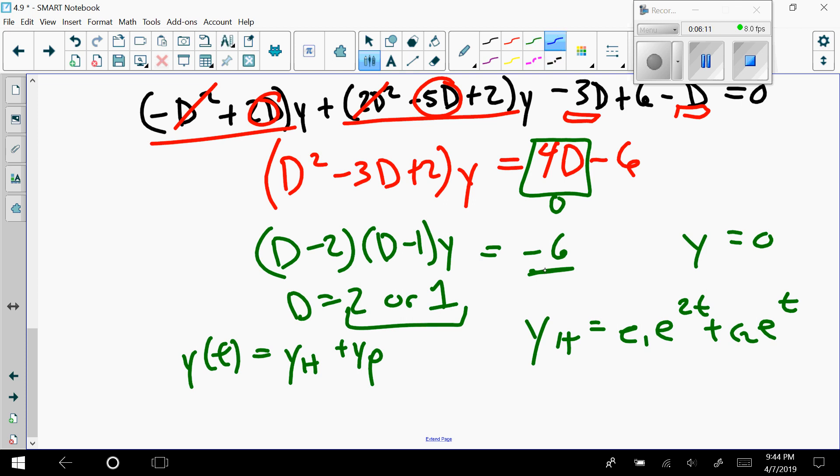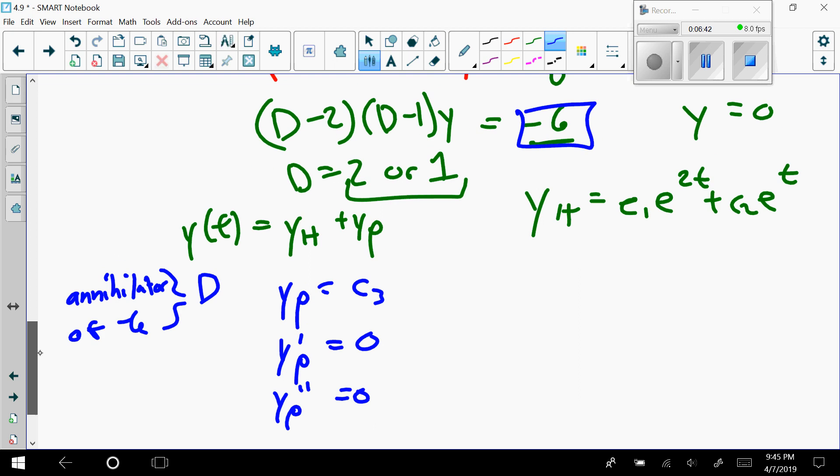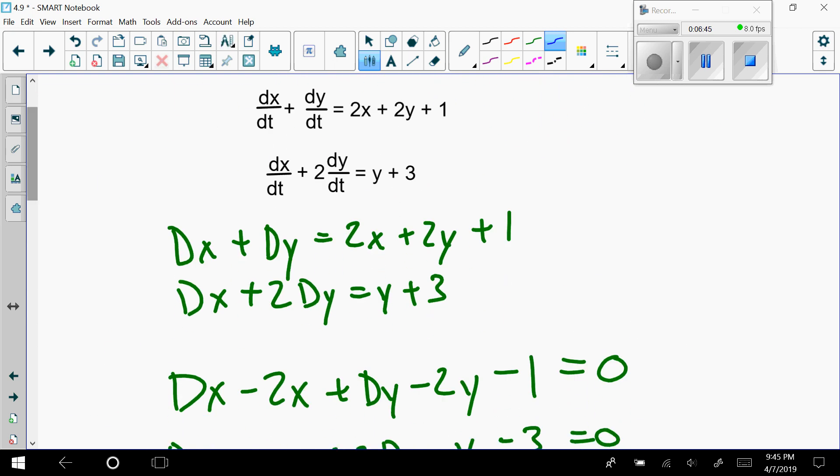Now for the particular, the annihilator of negative 6 is D. Well, if it's D, then that's D equals 0. Did I have 0 before? No. So the particular is just some constant. That means the first derivative is zero and the second derivative is zero. It's supposed to be a solution. If I scroll back up to the top looking at a solution here, it should satisfy any of the—